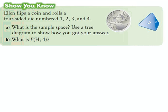Chapter 11 — this is a review from grade 7. The first question says Ellen flips a coin and rolls a four-sided die numbered one, two, three, and four. What is the sample space? A sample space basically means what are all the possible combinations — what are all the possible combinations.